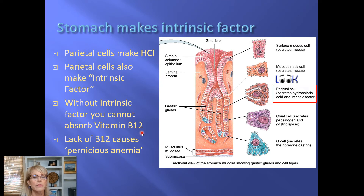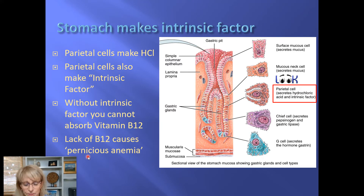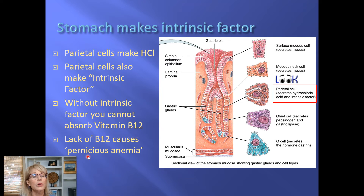Here's another issue: you can have an excellent, very rich vitamin B12 diet eating all kinds of animal products, but if your parietal cells don't make intrinsic factor, it just goes right through and out the other end. A lack of vitamin B12 causes a condition called pernicious anemia. From the name you can tell it causes anemia and is very bad — pernicious — but it doesn't just cause anemia; it also causes changes in the brain.